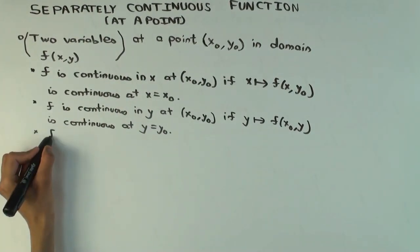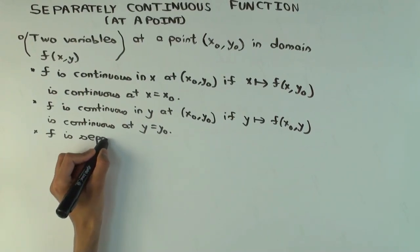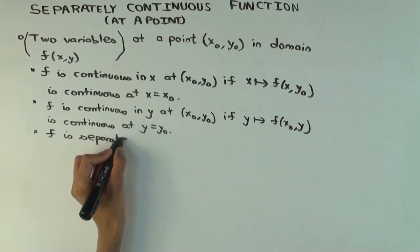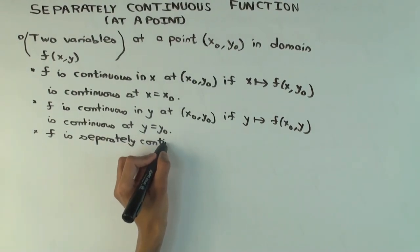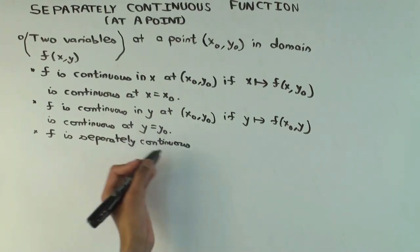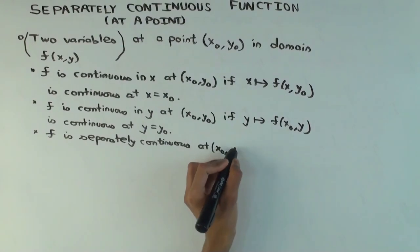And we say that f is separately continuous in both variables. I want to write in both variables, but that's implicit. If it's separately continuous at the point, if what?